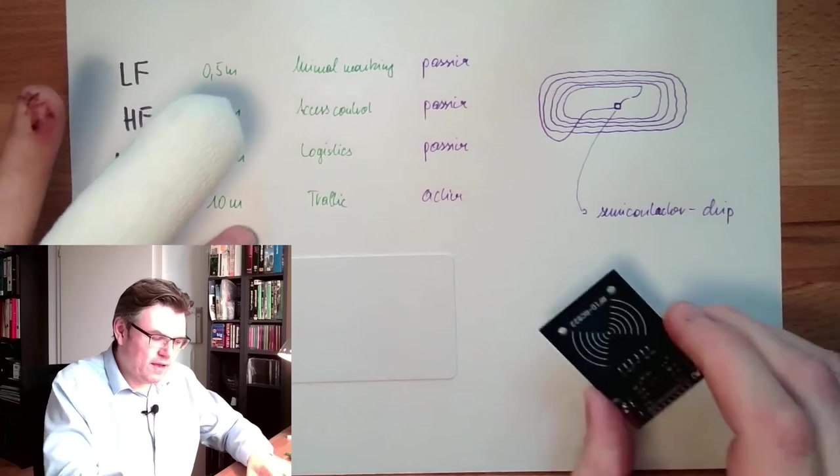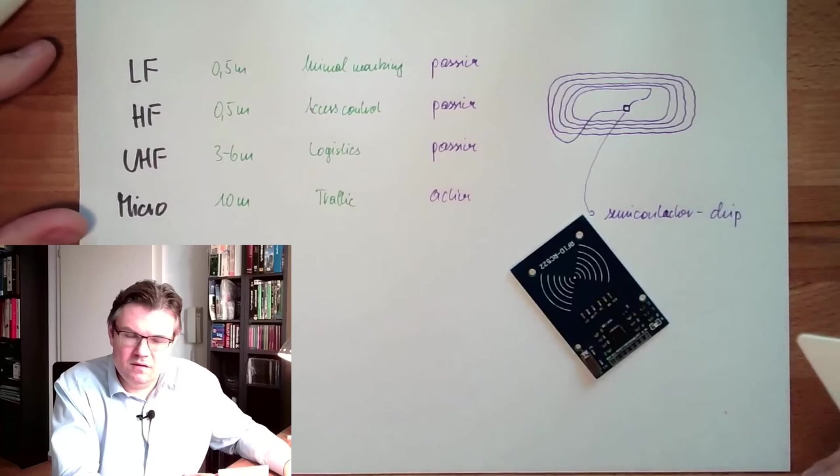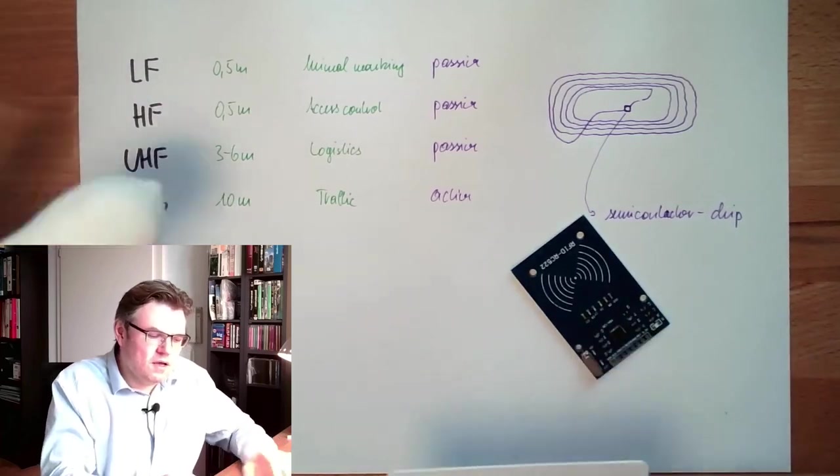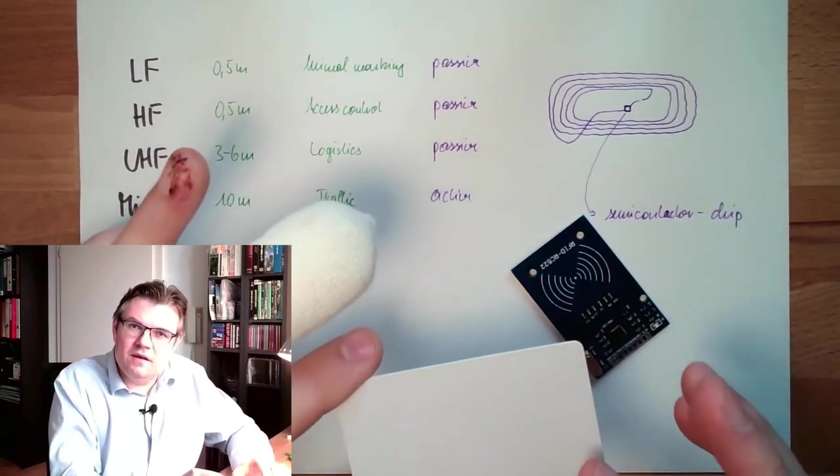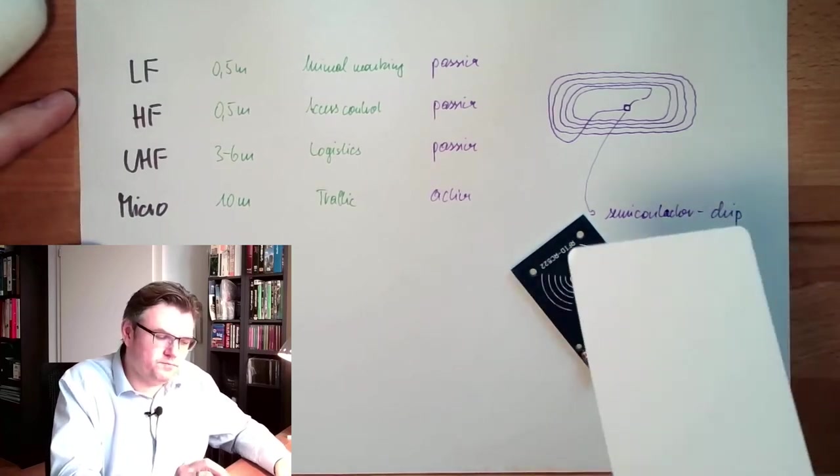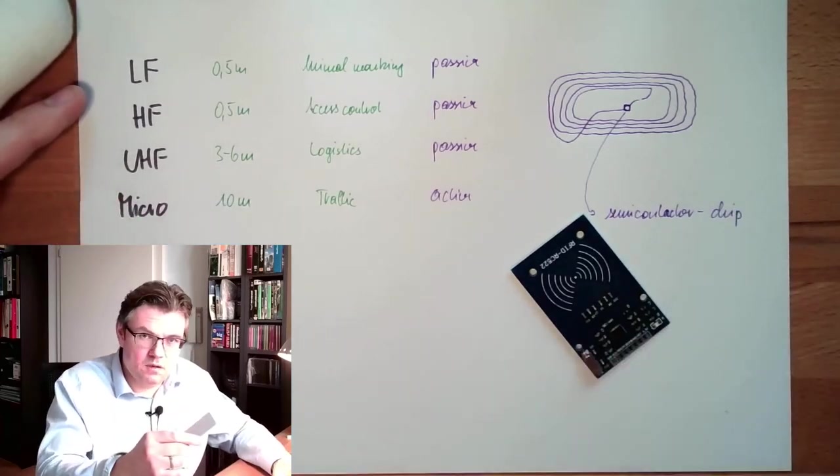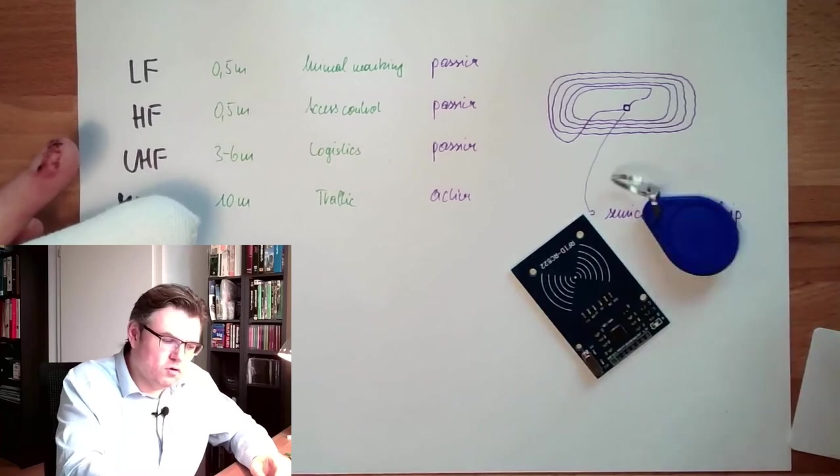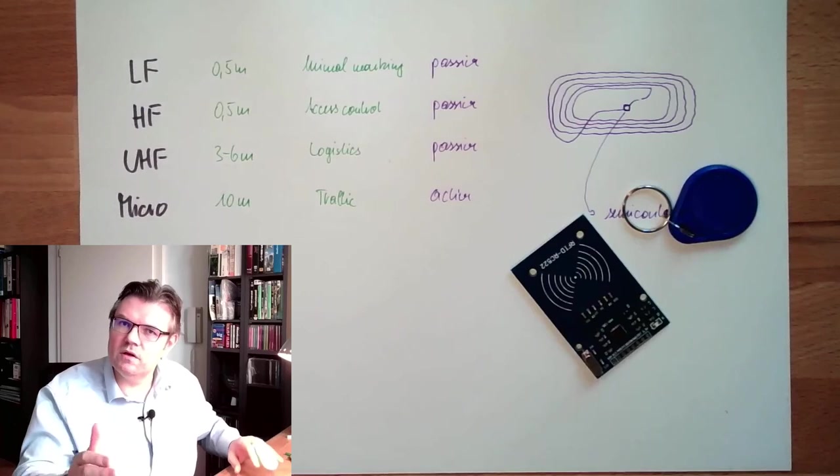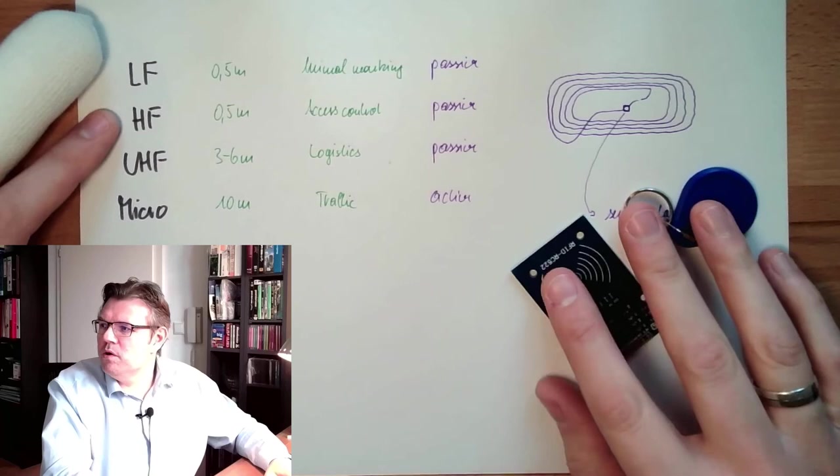Basically, how far we can get away from the reader is basically a feature of the antenna. With active ones, it's no issue. With passive ones, the smaller the antenna is, the closer I need to get. And the bigger the antenna is, the farther away I am. There are antennas small like this, or small like this. And there might be antennas which use half a meter. Then I can read container stuff and so on. These are usually pretty big antennas.